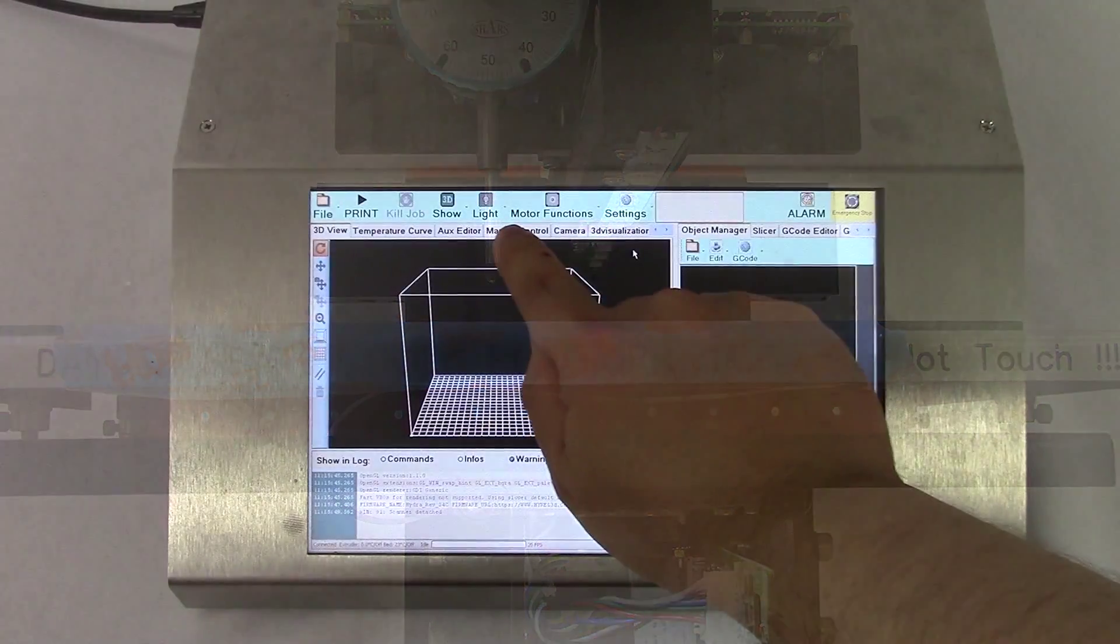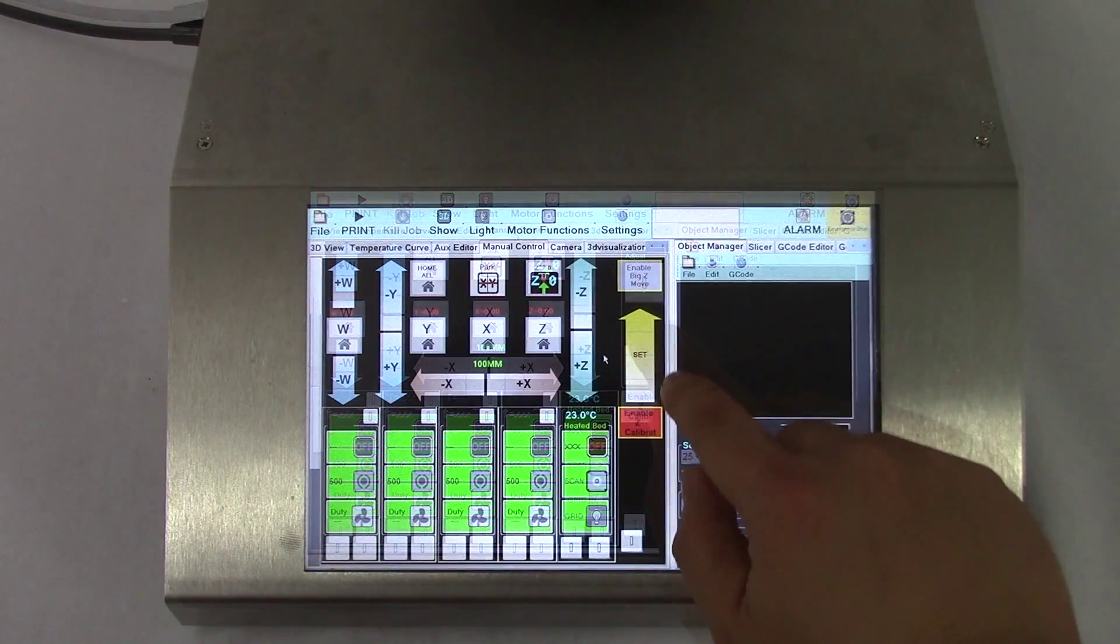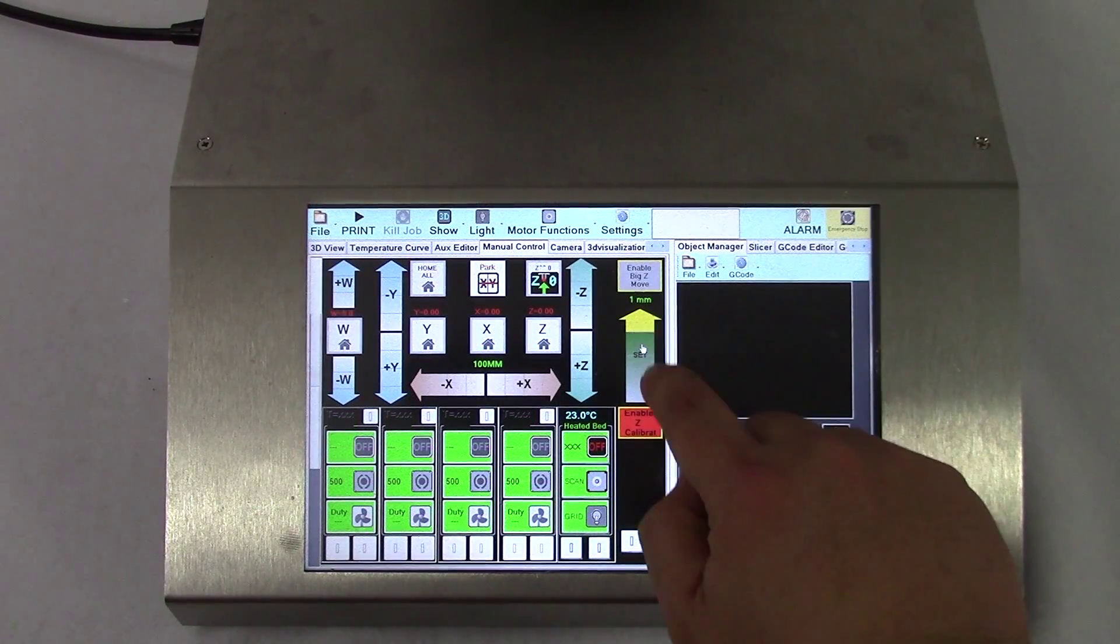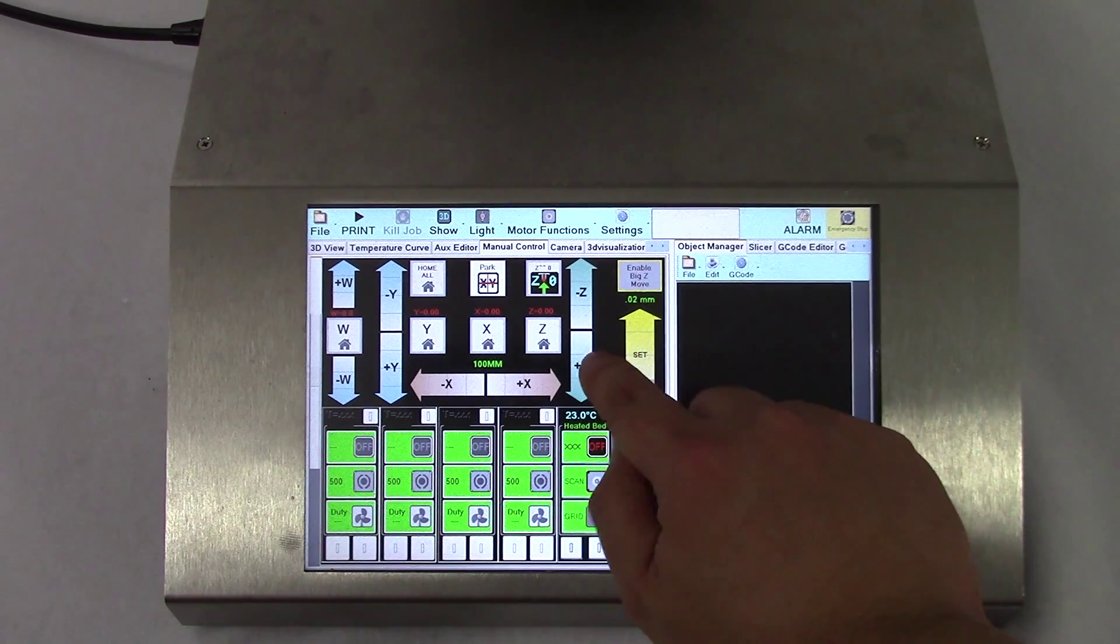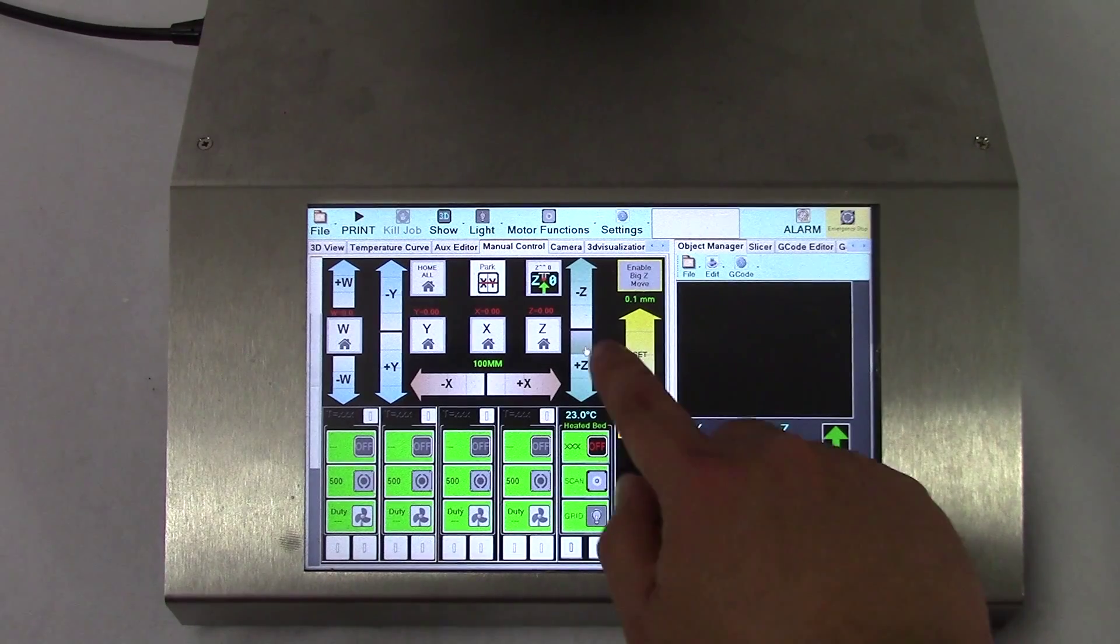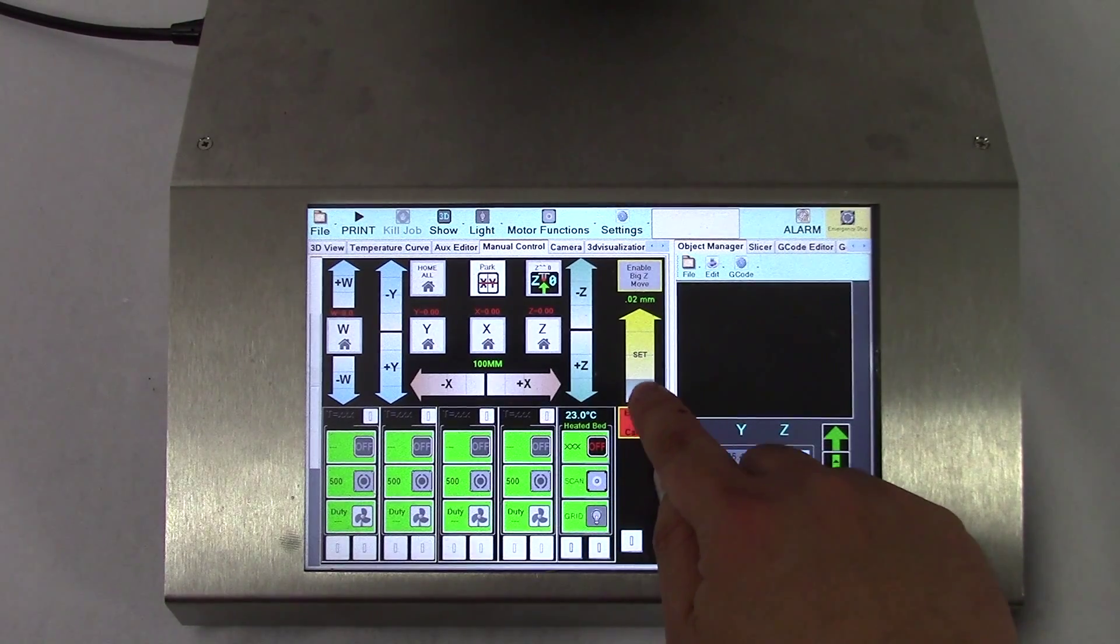Afterwards, go to the manual control screen and use a combination of the Enable Z Calibrate button and the red button to exit the calibration sequence.